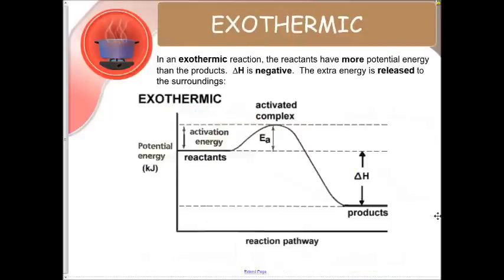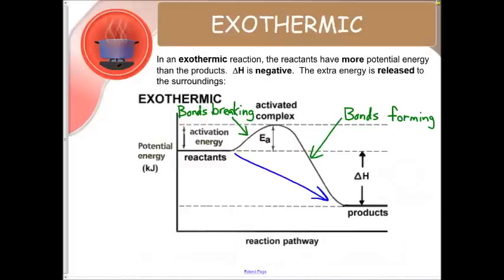Now our other example is an exothermic reaction. The reactants have more potential energy than the products. Our overall change in H is negative. The extra energy is going to be released to the surroundings. Now we are starting at a higher potential energy level, but we're still going to break our bonds to get to our activated complex. As we start forming new bonds, we release much more energy this time. And the overall reaction is going to decline.